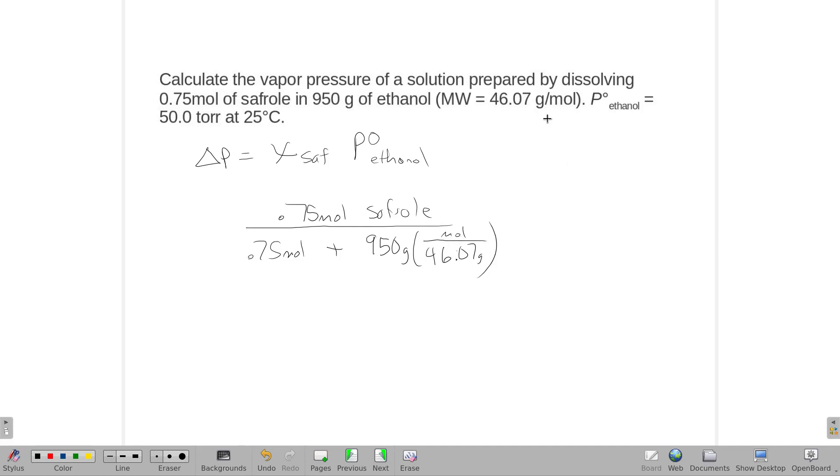Convert that to moles using the molecular weight. That should be the mole fraction. Once I have that, I'm just gonna multiply that by the 50.0 torr, and I'll get a delta P in terms of torr.